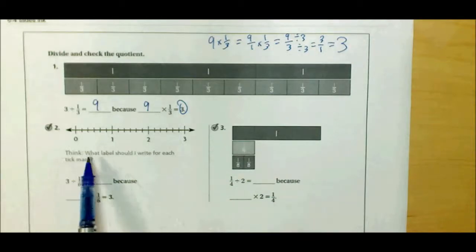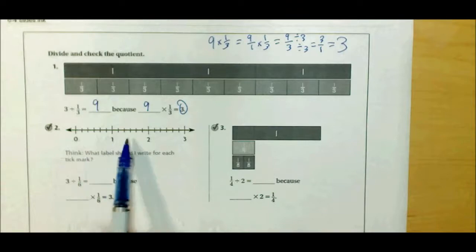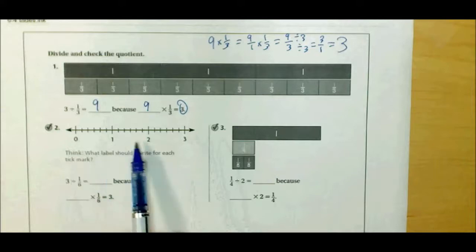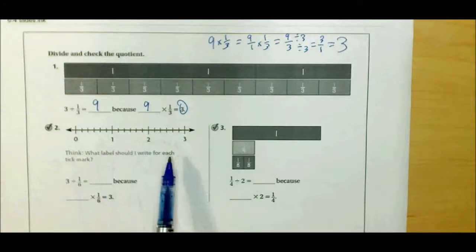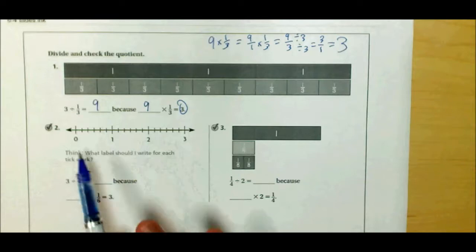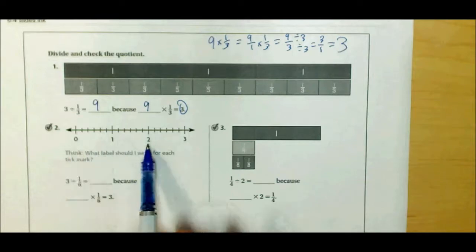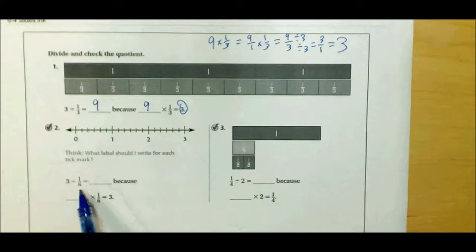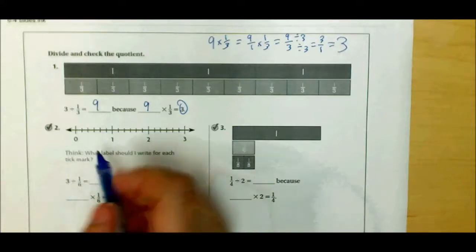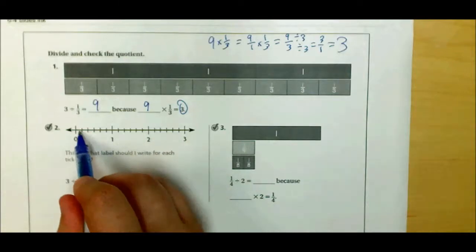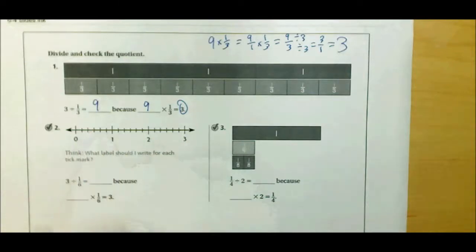Number 2 is kind of a similar problem. This is 3 divided by 1 sixth. So let's say I have 3 of something. Let's say 3 pies this time. I have 3 pies. This is 1 pie, this is 2 pies, this is 3 pies. And I'm going to divide each one into sixths. That's what 3 divided by 1 sixth means. So notice that there's 1, 2, 3, 4, 5, 6 pieces in each pie.